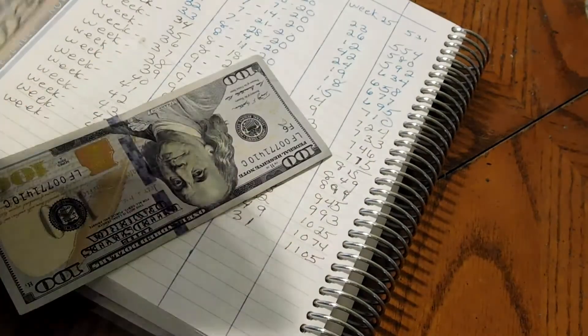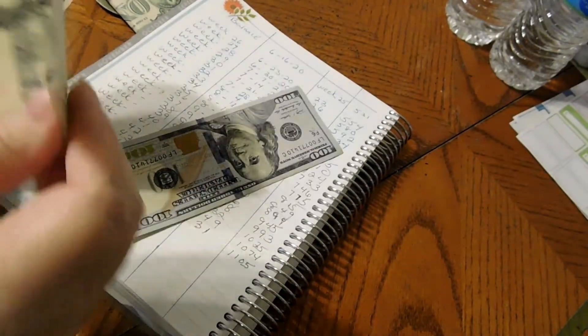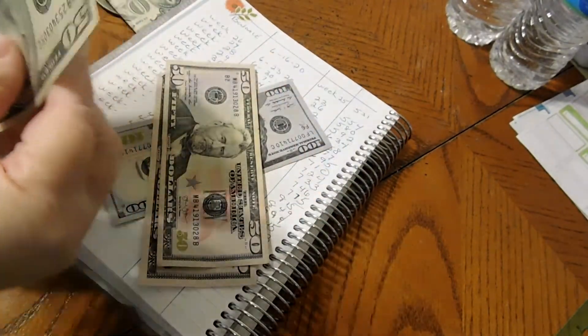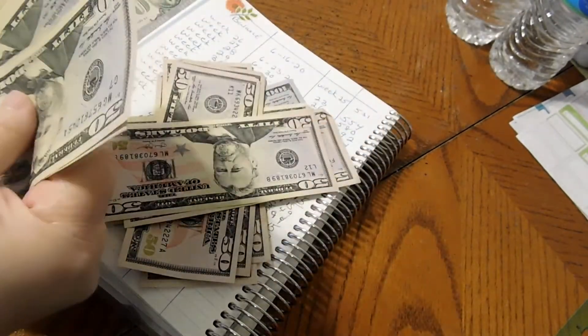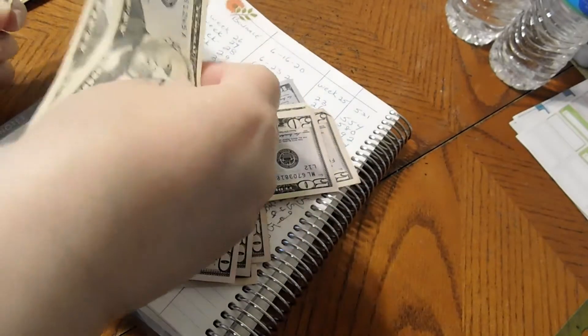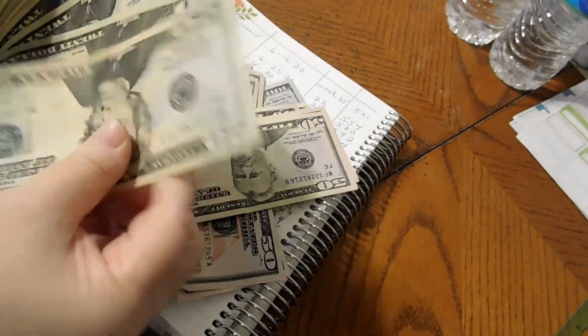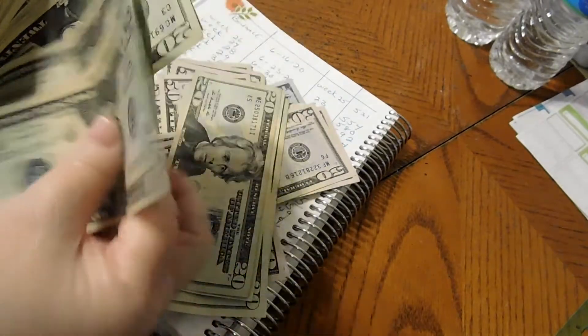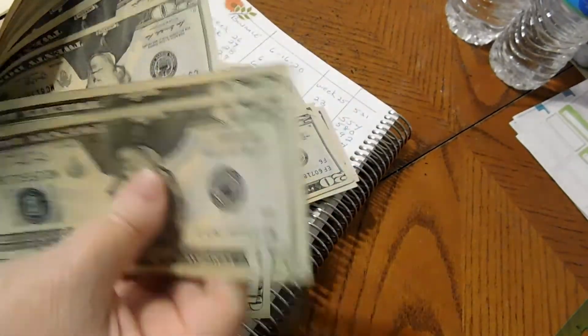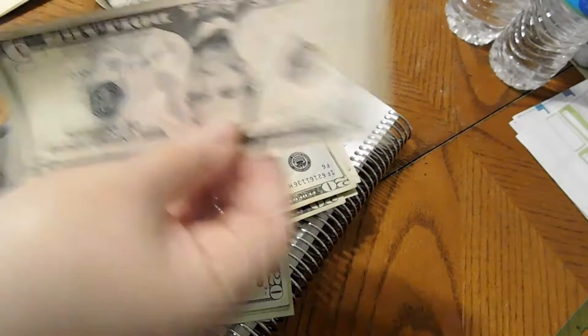So $1,105 is what we're looking for. Let me count: 100, 200, 300, 400, 500, 600, 700, 800, 900, 1000, and $1,105. We have the correct amount.